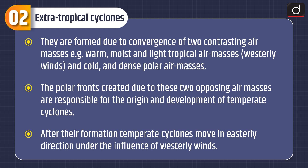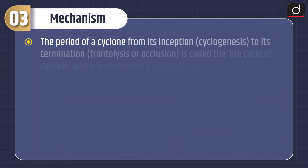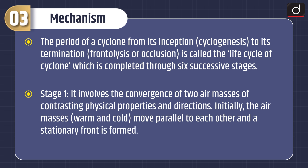After their formation, temperate cyclones move in an easterly direction under the influence of westerly winds. Now moving on to the mechanism. The period of a cyclone from its inception — cyclogenesis — to its termination — frontal occlusion — is called the life cycle of the cyclone, which is completed through six successive stages. Stage one involves the convergence of two air masses of contrasting physical properties and directions. Initially, the warm and cold air masses move parallel to each other and a stationary front is formed.